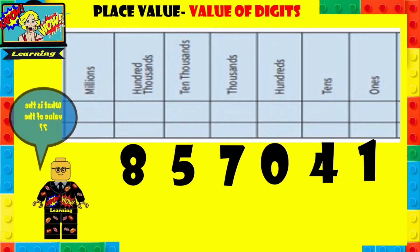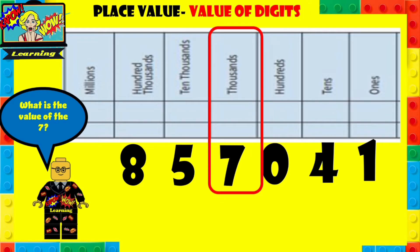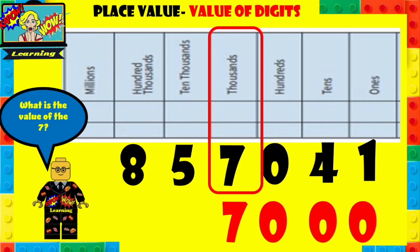The next question is: what is the value of the seven? Try to find the seven, try to work it out. You can pause it and then play it to see if you got the answer correct. Now there is the seven. The seven is in the thousands, so your answer should have been seven thousand.